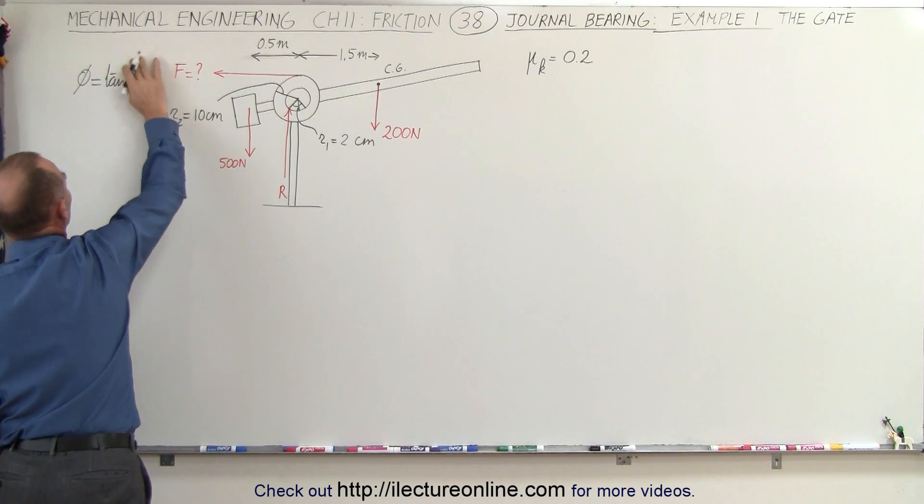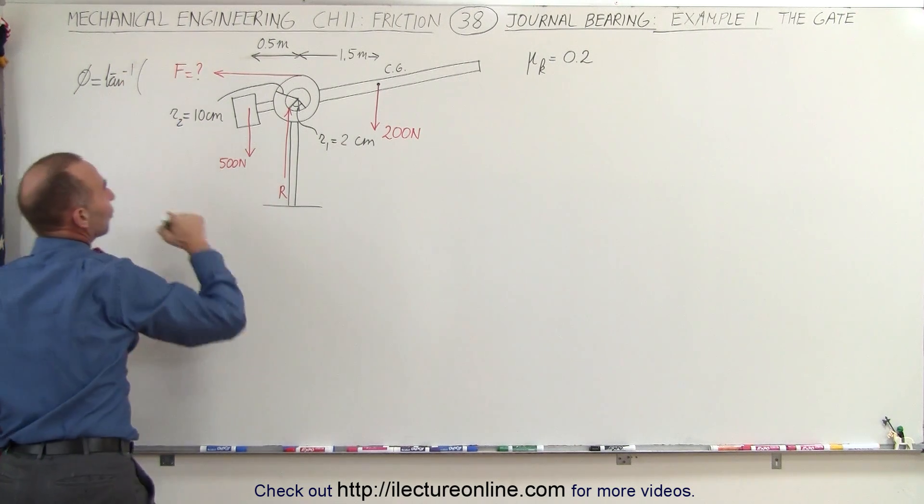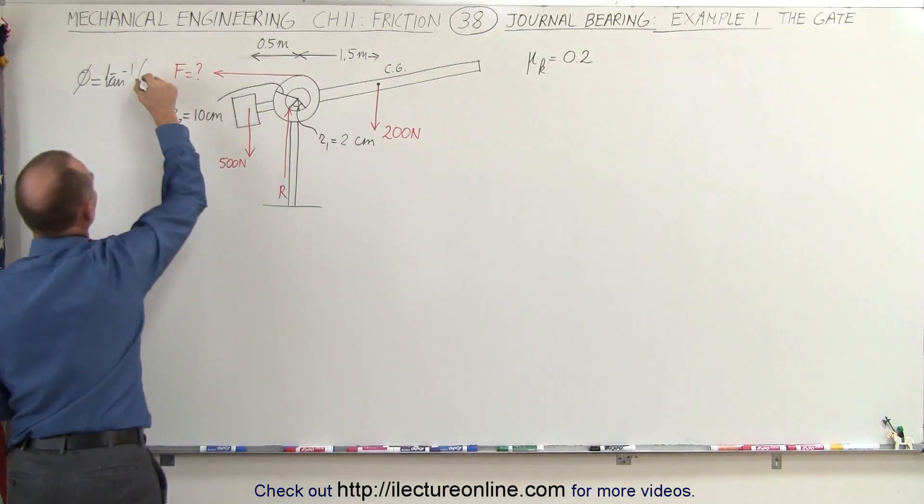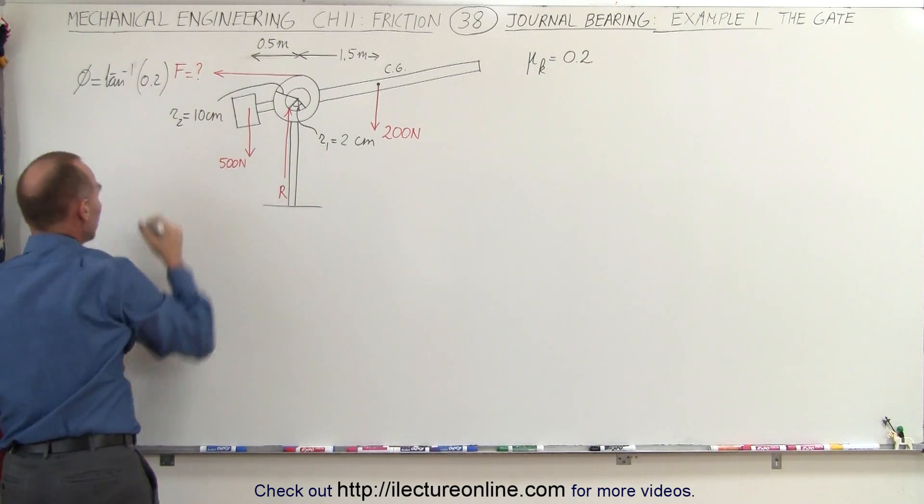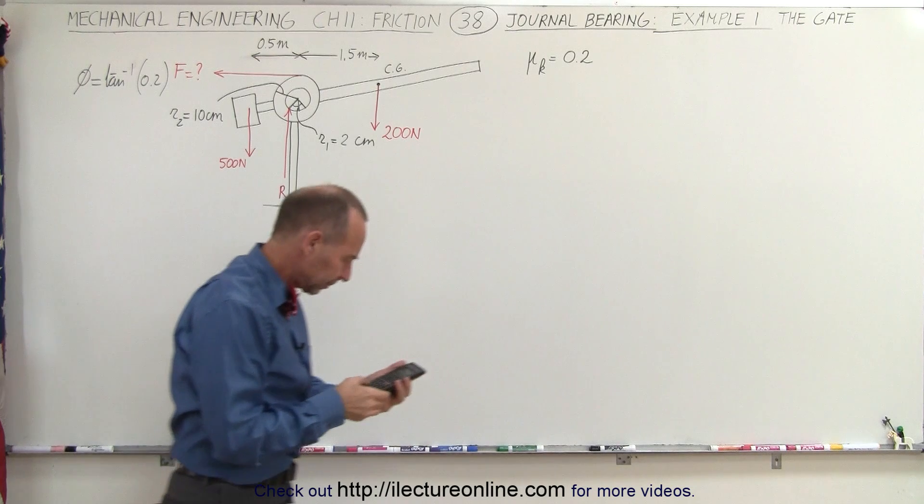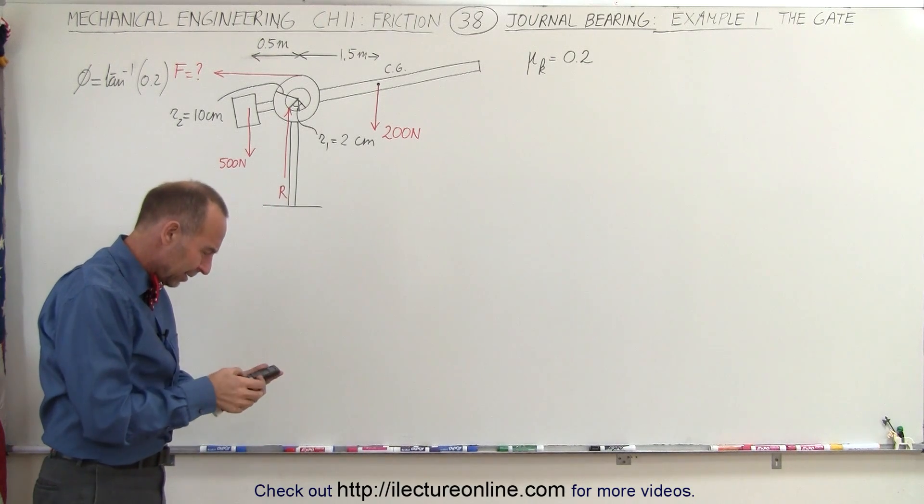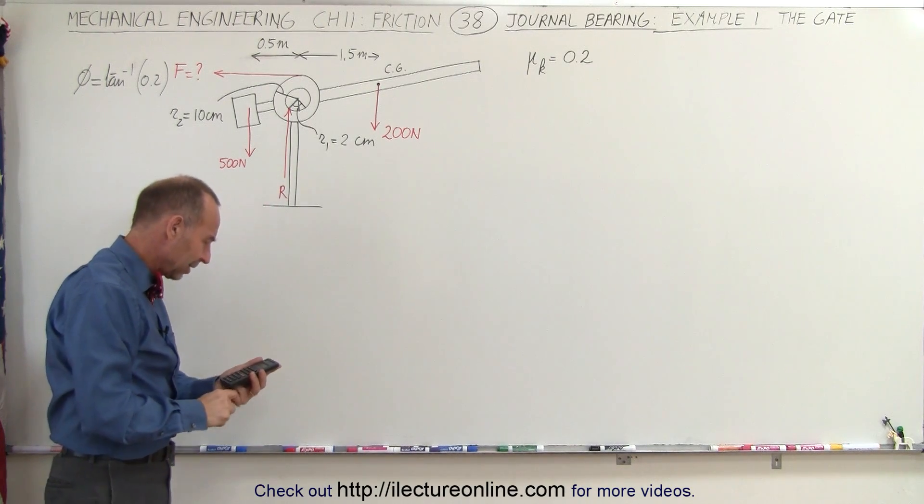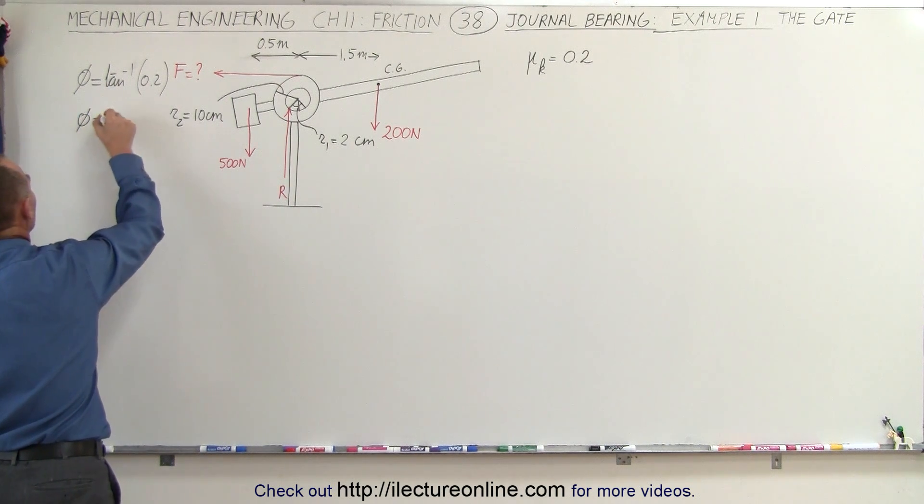We're going to use the kinetic coefficient of friction 0.2, and let's go ahead and see what that's equal to. Take the arctangent of 0.2, that gives us an angle of 11.3 degrees, so phi equals 11.3 degrees.